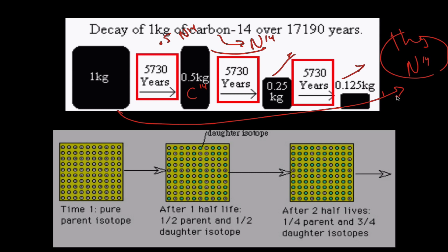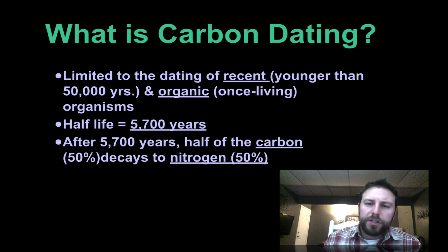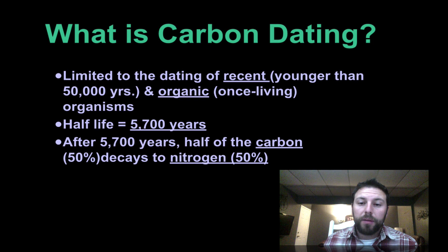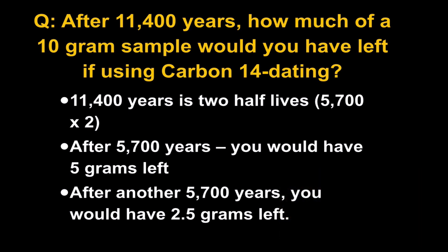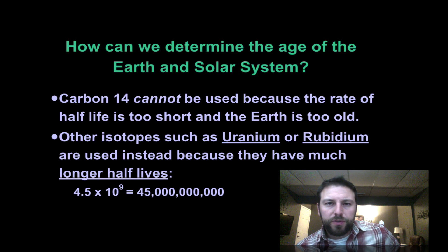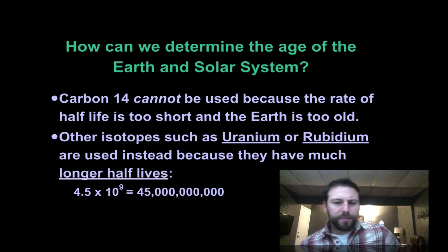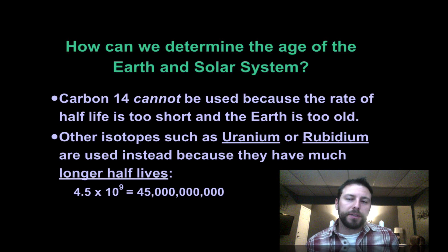We can use these radioactive isotopes to figure out the time when things once were either living or formed. Here's an example problem we'll go over in class. Carbon-14 alone is only used for things roughly 15,000 to 40,000 years old. But we know Earth is 4.6 billion years old — a big difference — so we can't use carbon-14 for all once-living things; we have to use other isotopes.